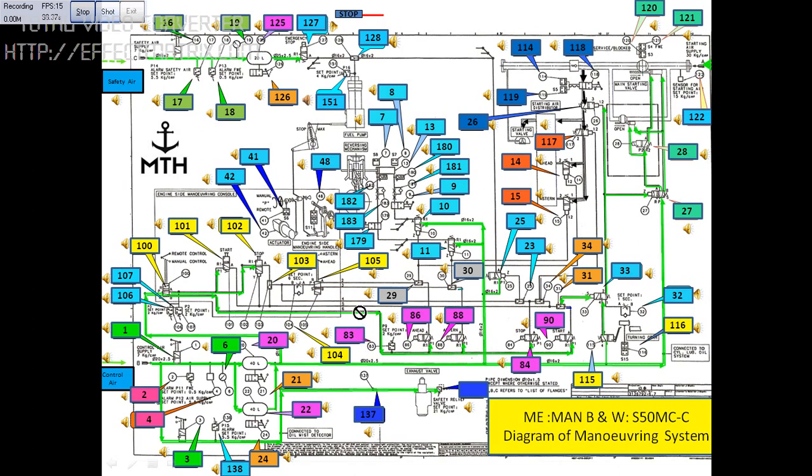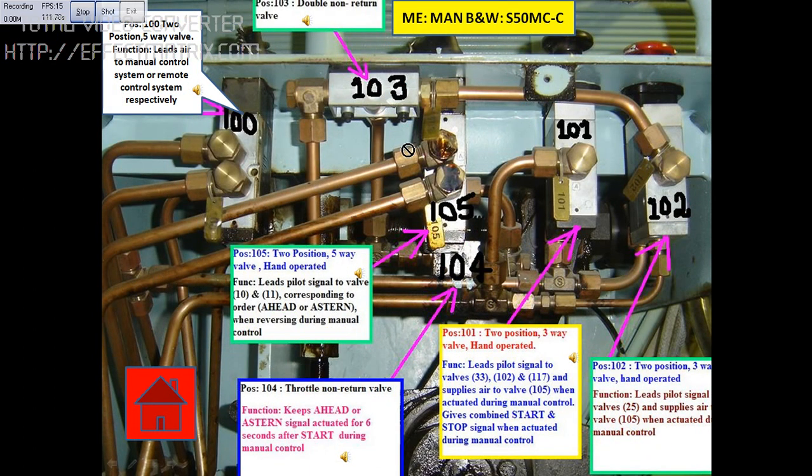For the time being I will just show you how it is. Suppose you want to see 102 where the components are, so you have to just click here. When you click here it will go to that particular block. Here I have opened the cover, this is the emergency platform. I have marked this is the component 102, and 102 is nothing but a 2-position 3-way valve. So the function of this valve is to lead pilot signal from valve 25 and supply air to valve 105 when it is activated.